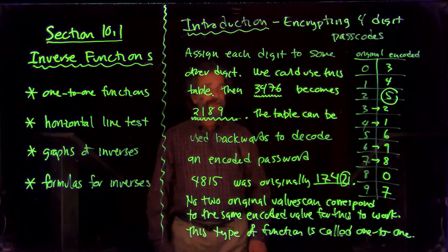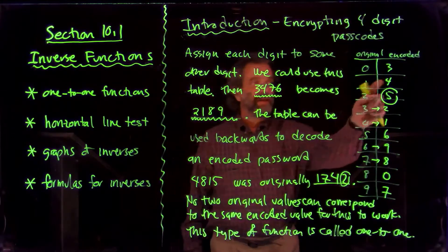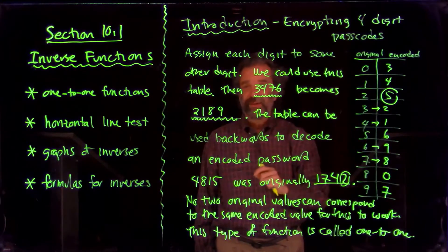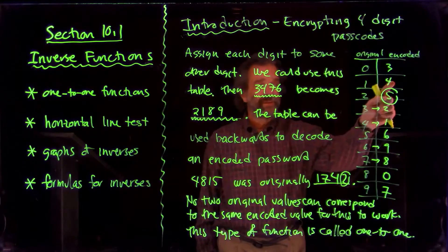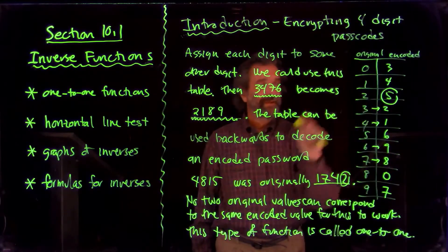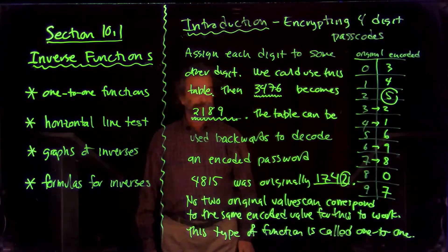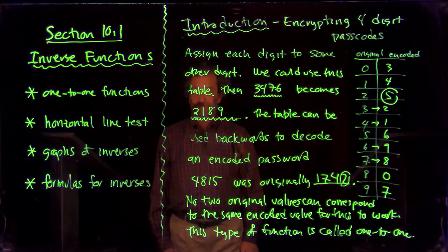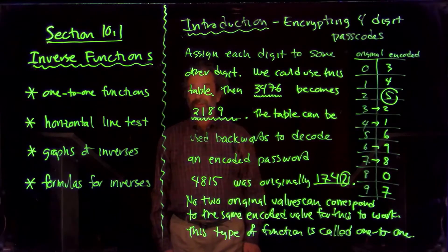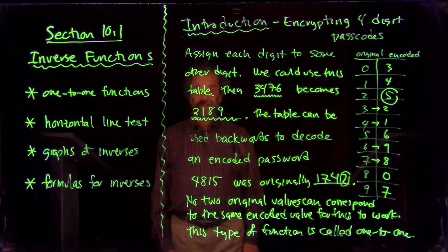If you want to go backwards in any type of function process — where you've got x and f(x), and from f(x) you really want to reconstruct x — then the function you started with has to be a one-to-one function. Otherwise, if two different x values corresponded to the same output, you wouldn't be able to undo the function. So that is the situation: we'll be looking at one-to-one functions, and one-to-oneness turns out to be the characteristic you need to create inverse functions. We'll be investigating that more thoroughly as this section continues.